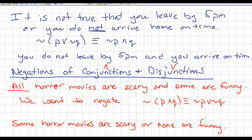Here's another example. It is not true that you leave by 5 p.m. or you do not arrive home on time. So once again, we have that it is not true that, so you have this negation on the outside. You leave by 5 p.m., that'll be P. You do not arrive home on time, so there'll be a not Q. So I wanted to look at how I would negate that entire sentence. So this would be not P and Q in this case. Notice that because the negation of the Q here, it becomes positive over here.